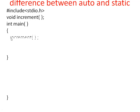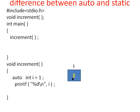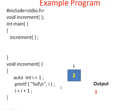Program execution begins from main. The first time increment function is called, control jumps to increment function and begins the function. Now assume that i is declared with the auto storage class. Since i is auto storage class type, memory is allocated for i and the value 1 is stored in that memory location. Then printf i — the current value of i is 1, so 1 is printed on the output screen. Then i value increments, i = i + 1, i value becomes 2. Then end of the function is reached — the control leaves this function and goes back to main function.